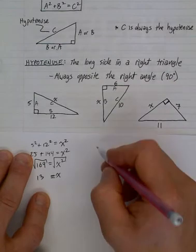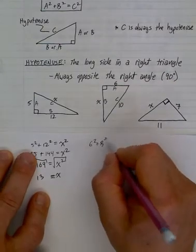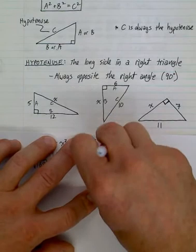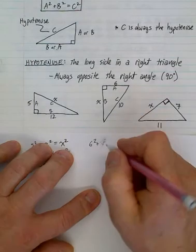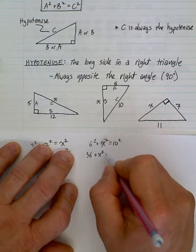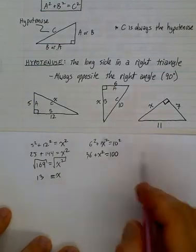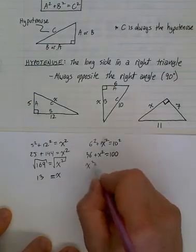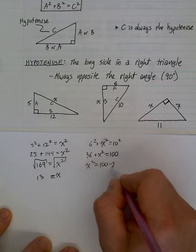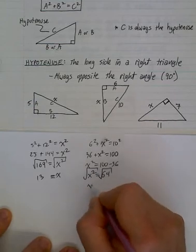So 6² + x² = 10². So 36 + x² = 100. We have one extra step here; we're going to bring this 36 over, so you're going to get x² = 100 - 36. x² = 64. We take the square root of both sides, you get x = 8.